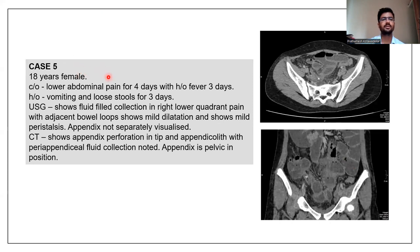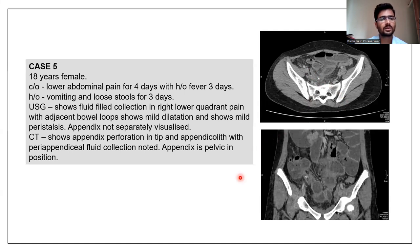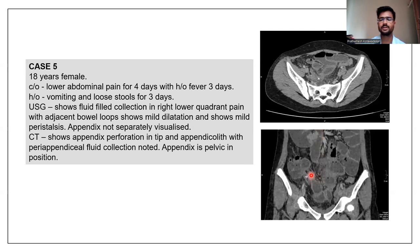The fifth case was an 18-year-old female with lower abdominal pain for 4 days, fever for 3 days, vomiting and loose stools. Ultrasonography showed fluid collection in the right lower quadrant, with adjacent bowel loops showing mild dilatation and mild peristalsis. The appendix was not separately visualized. CT showed appendix perforation at the tip and appendicolith in the image, with peri-appendiceal fluid collection noted. The appendix is pelvic in position, and the appendicolith is seen in the image.